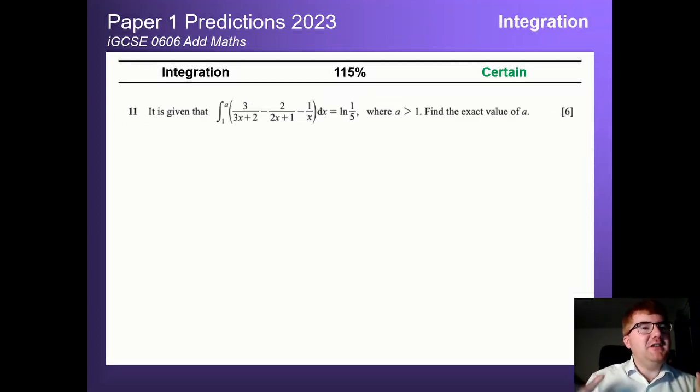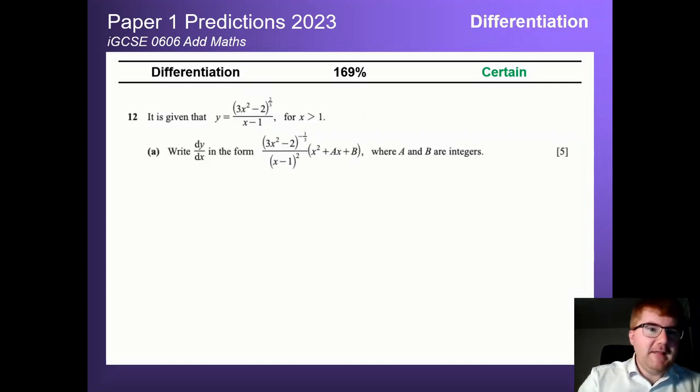Integration, again you know calculus is a big part of the ad maths course and of course integration at 115% is no surprise. Again they can do a variety of different forms: a straightforward integration question or something a little bit different here where you actually have to work out one of the limits and then kind of work backwards to find the answer. And wherever integration is, differentiation is also around as well. Make sure you know all your differentiation rules, particularly the product rule and the quotient rule as you can see here. This is a quotient rule style question, so make sure you revise this very thoroughly, also very important for the paper two as well.